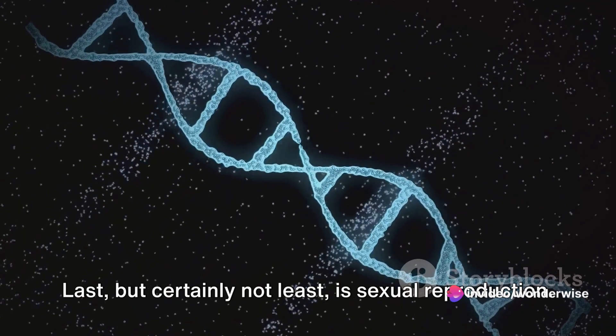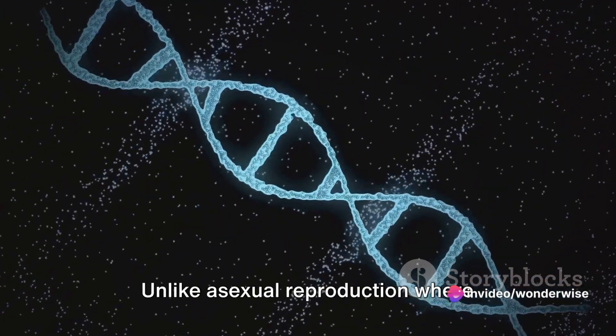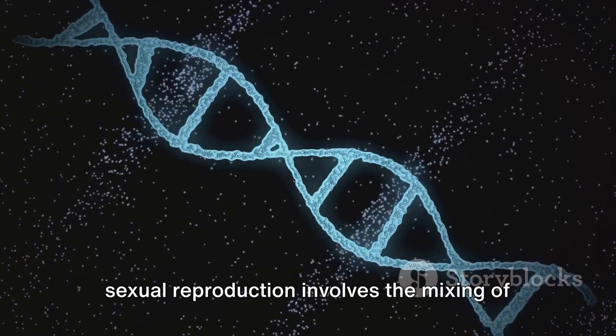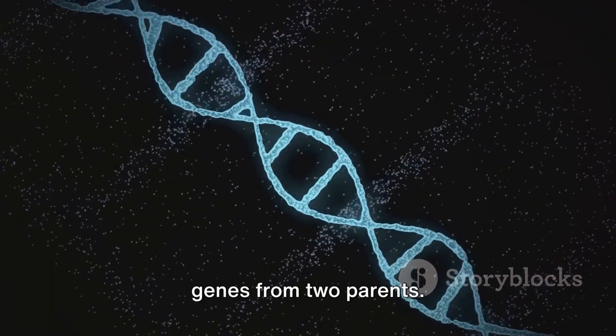Last, but certainly not least, is sexual reproduction. Unlike asexual reproduction where offspring are exact copies of the parent, sexual reproduction involves the mixing of genes from two parents.